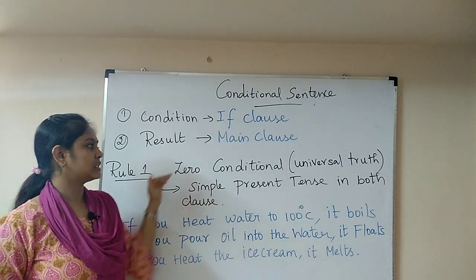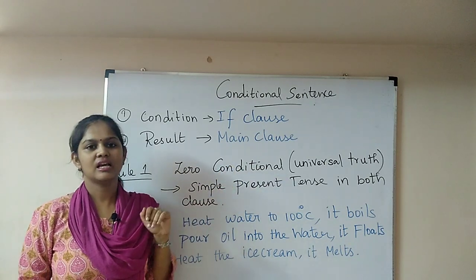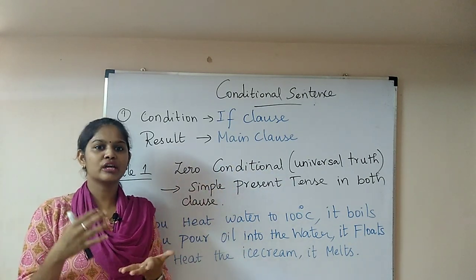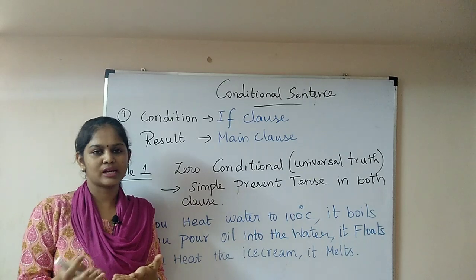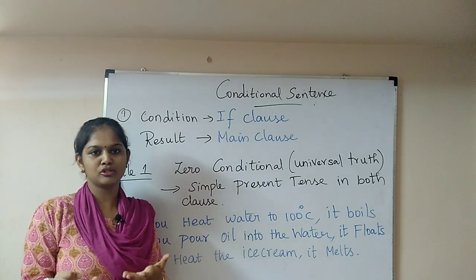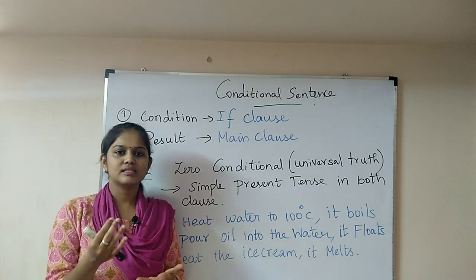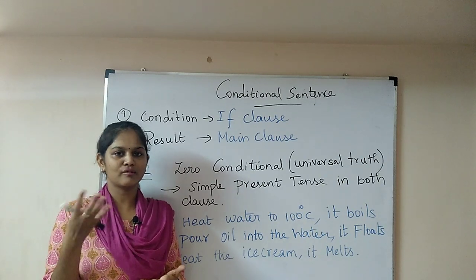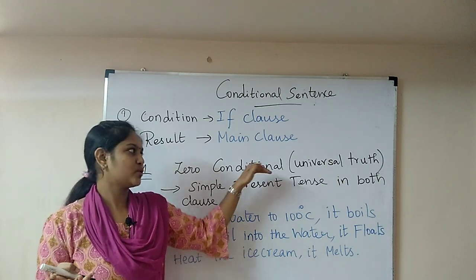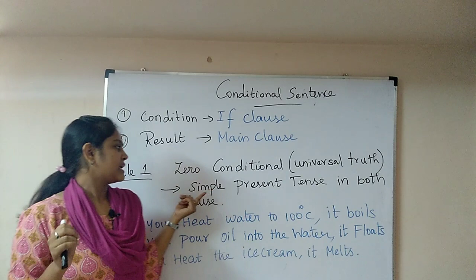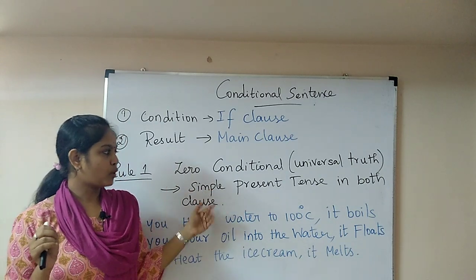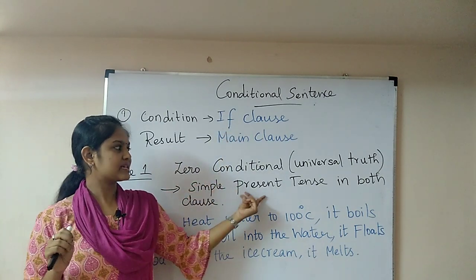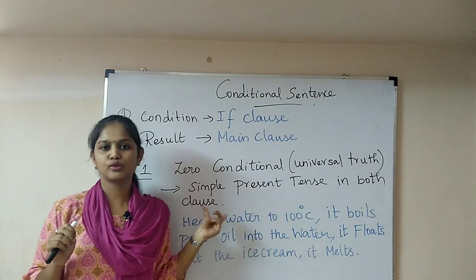Rule number one is the zero conditional. This rule is based on facts — things that are always true. For example, 'the sun rises in the east' is a permanent fact, always true — a universal truth. In this rule, both the if clause and the main clause use simple present tense.